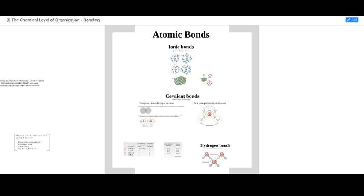In talking about the bonds between atoms, we want to consider three types: ionic bonds, covalent bonds, and hydrogen bonds.